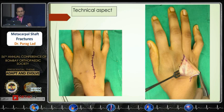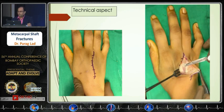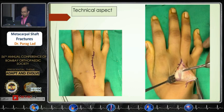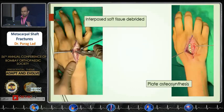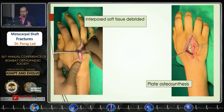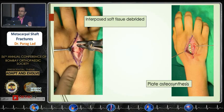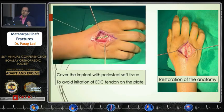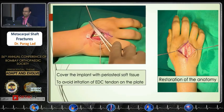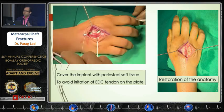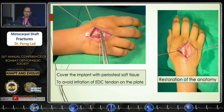This is the technical aspect — we usually consider open reduction. The extensor digitorum communis of the middle and ring finger and the junctura tendinae are retracted properly, then the interposed soft tissue needs to be debrided adequately, the fragment edges cleared, and plate osteosynthesis performed. Once you put the plate, you need adequate periosteal cover or soft tissue to cover the implant.